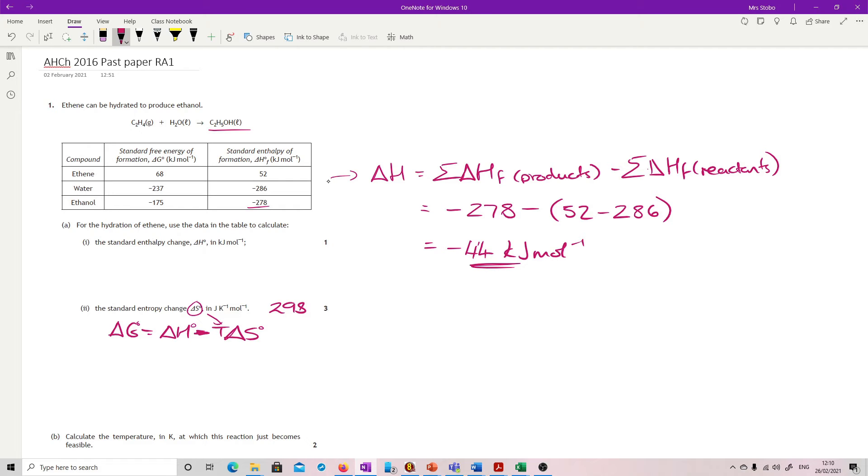So rearrange for this one. So ΔS is equal to ΔH minus ΔG over T. Just rearranging the equation, but you can substitute and shift them around as much as you want.